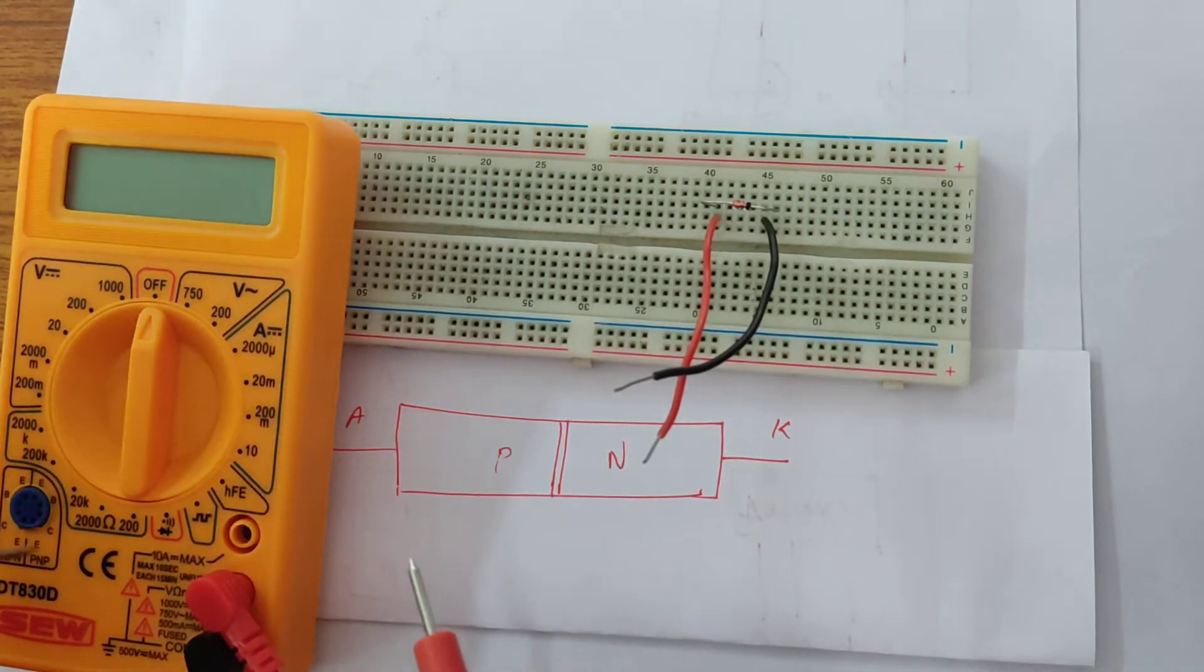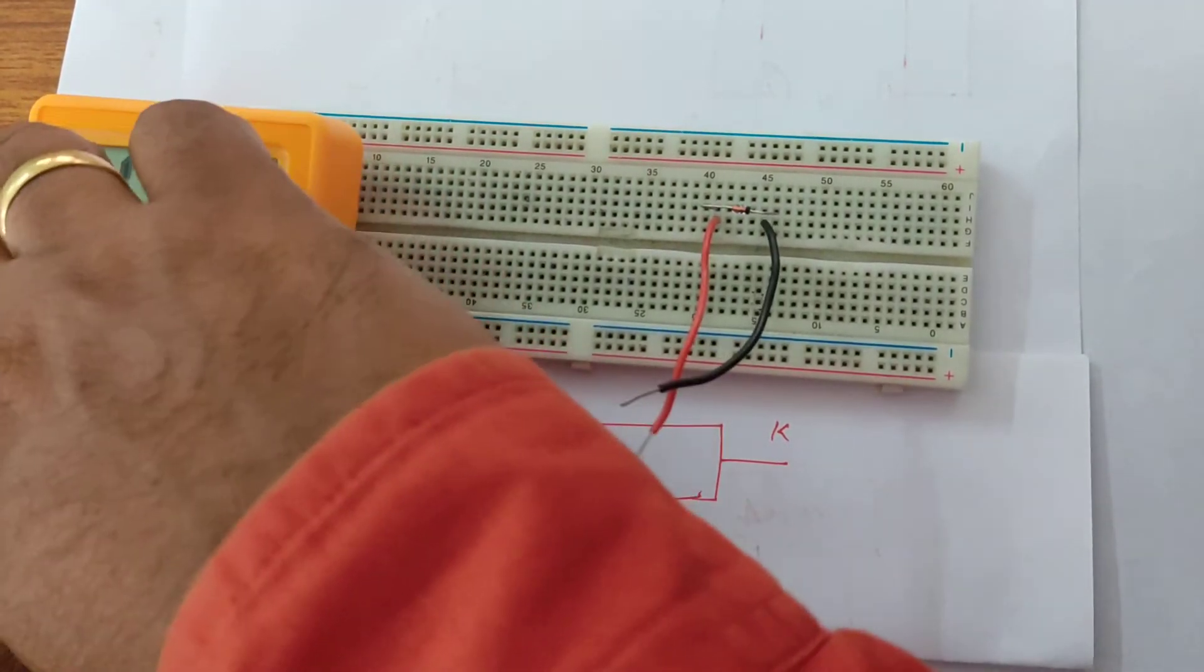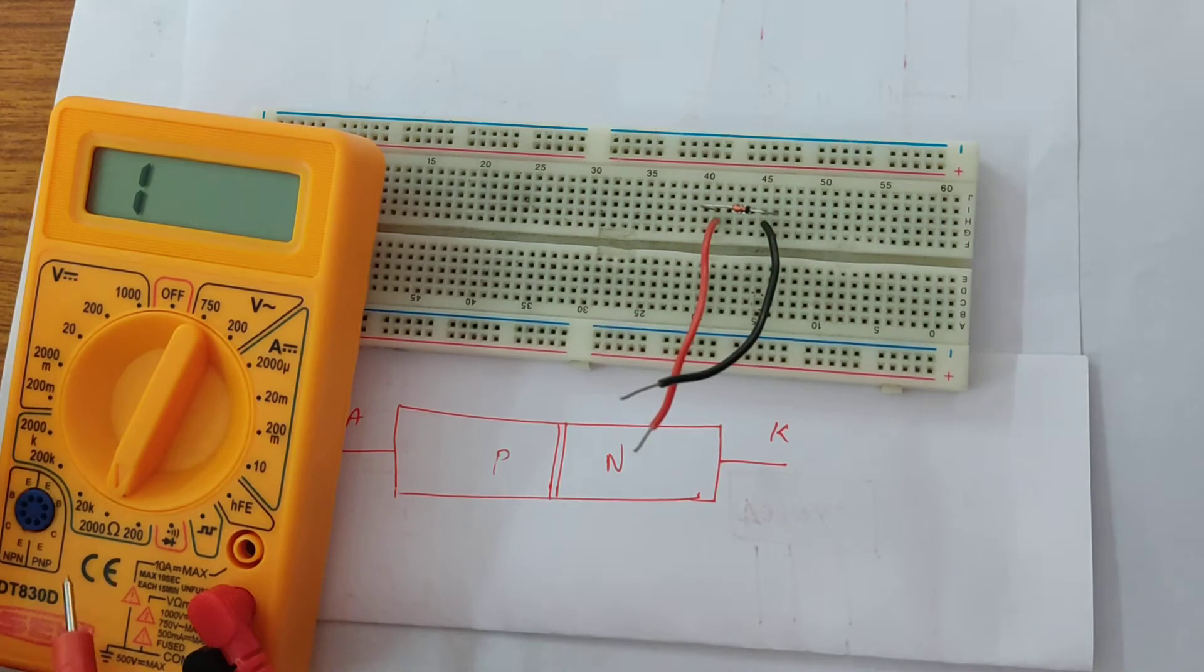So I'm going to measure the resistance using the multimeter. I'm going to change the multimeter range to 2000 ohms. I have kept it in 2000 ohms.